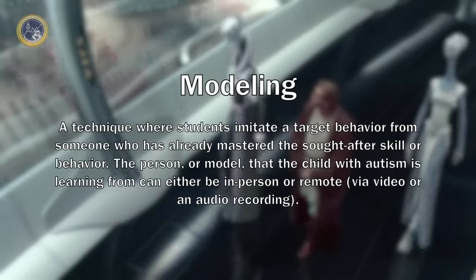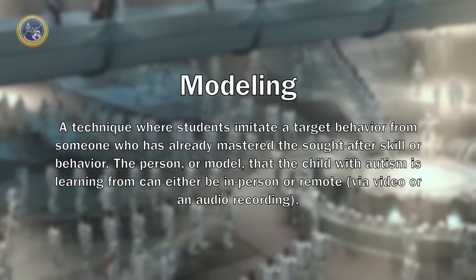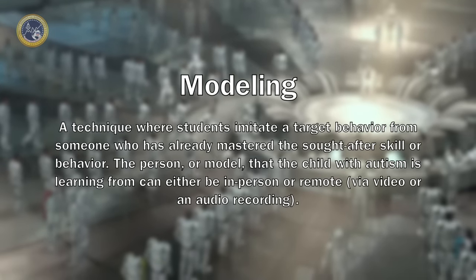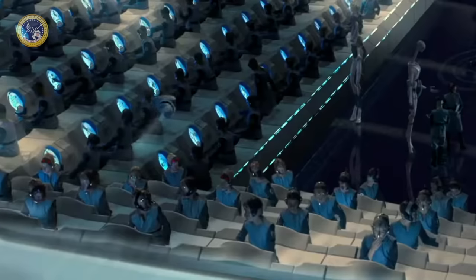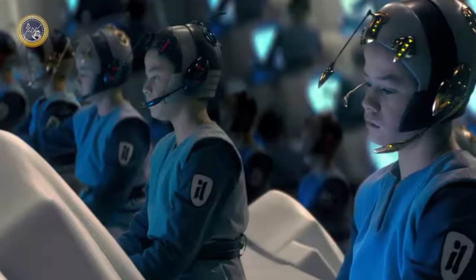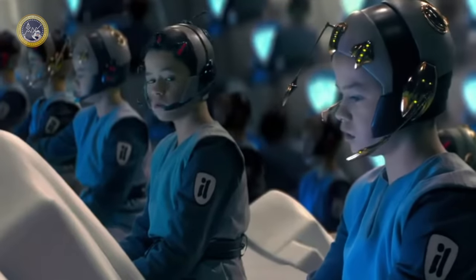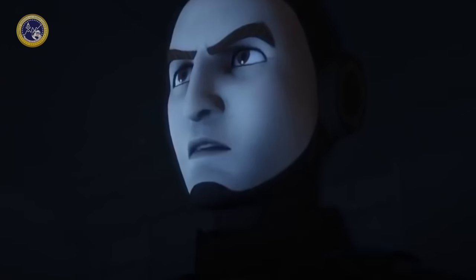Now we can talk about modeling. Modeling can be defined as a teaching technique in which the teacher demonstrates a desired behavior or response to a learner. We can see great examples of modeling in how the Empire trains stormtroopers. The Empire uses modeling — a technique in ABA that involves demonstrating a behavior for someone to imitate — to train their stormtroopers, as seen in Star Wars movies and in the TV show Star Wars Rebels, which gives us a glimpse of the stormtroopers' training regiment.